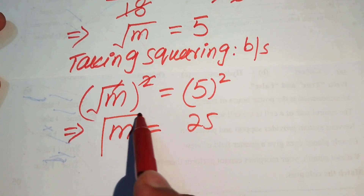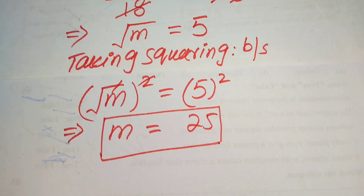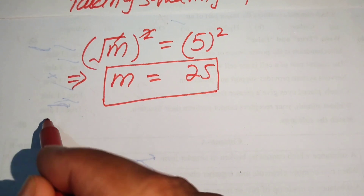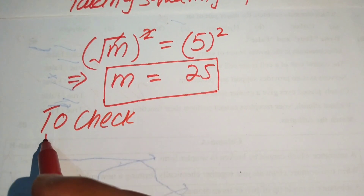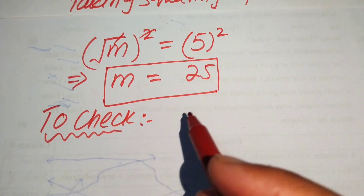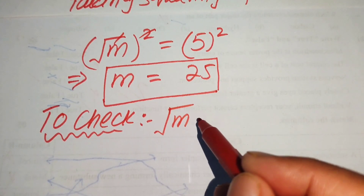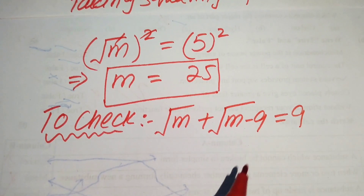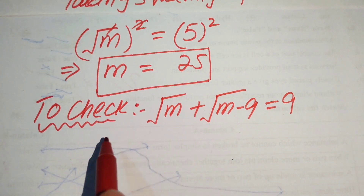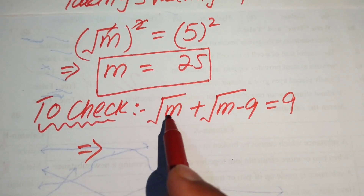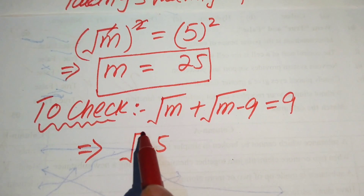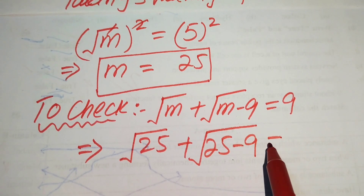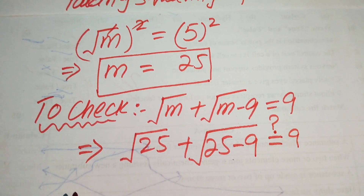This is our final answer. Now we verify whether this value of m satisfies the given equation. We copy down the original equation: square root of m plus square root of m minus 9 equals 9. Substituting m equals 25 on the left hand side: square root of 25 plus square root of 25 minus 9.